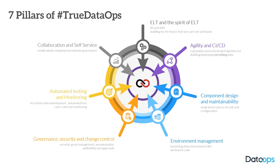We've deconstructed the philosophy of true DataOps into seven core pillars. The first of these is ELT and the spirit of ELT. Most people are familiar with ELT — extract, load, then transform — as a way of loading data into the data warehouse in its rawest possible form, to maximize the number of future use cases. The spirit of ELT takes us further, looking at keeping a history and record of changes to the data over time for the same reason.